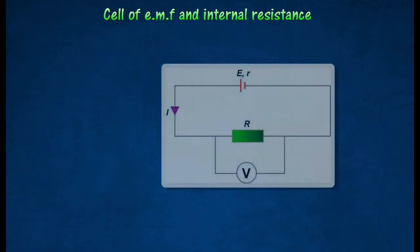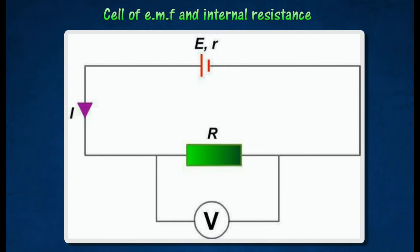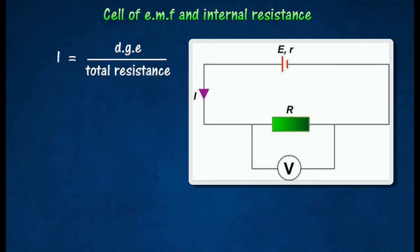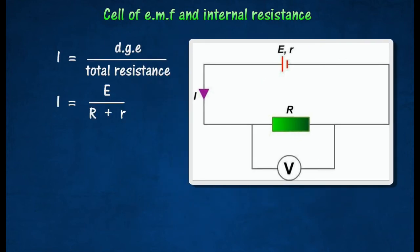The figure shows a cell of electromotive force and internal resistance in series with a resistor of resistance R. The current I flowing in the circuit is given as follows.